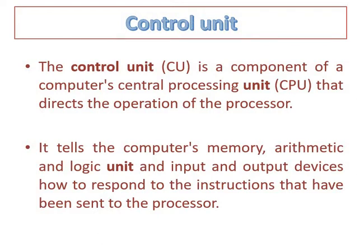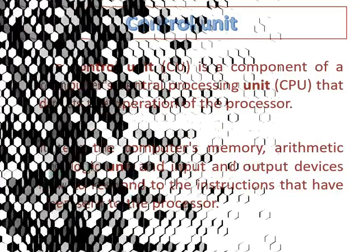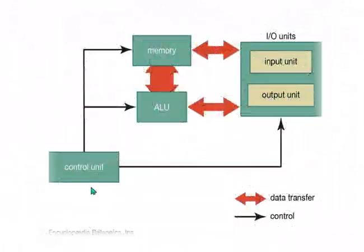As you can see in this diagram, the control unit is connected with memory, the ALU, and the output unit, and it also controls the input and output devices. The thick arrows represent the transfer of data, while the thin black arrows represent control signals through the control unit.